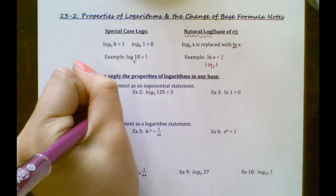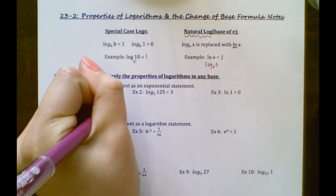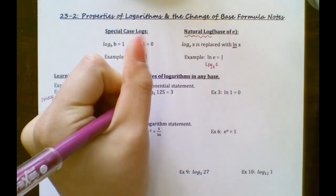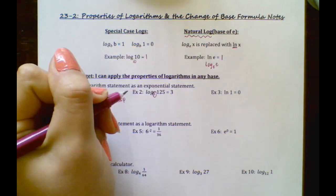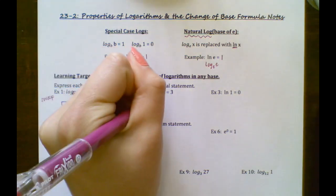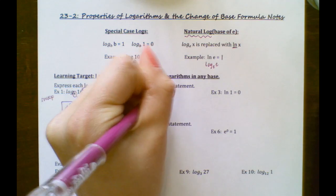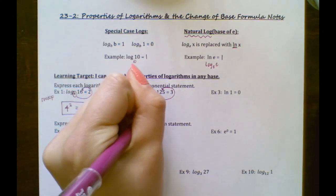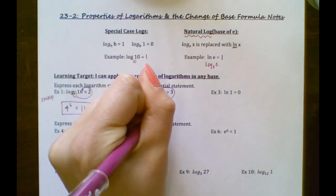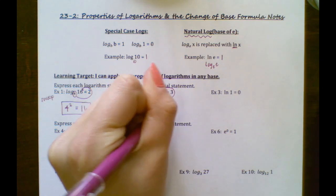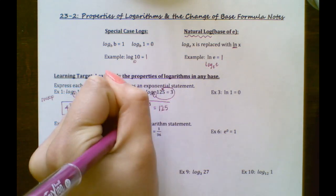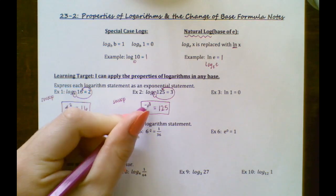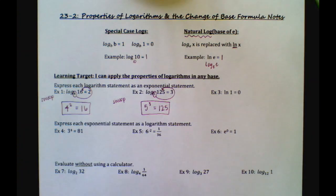Let's use the swoop method again on the next example. We have our first number and we swoop it to the other side, so we get 5 to the third power equals 125. Think about it — does this logically make sense? 5 to the third power is 125.